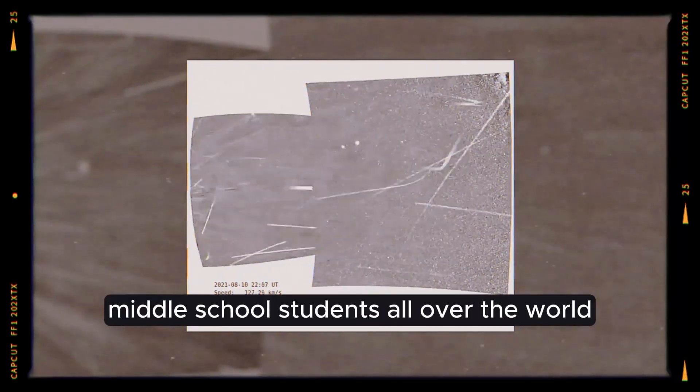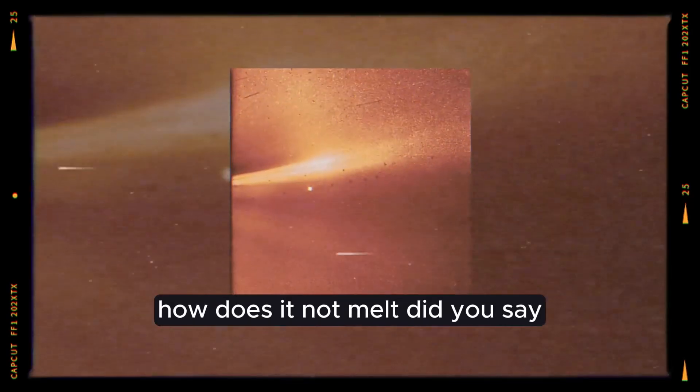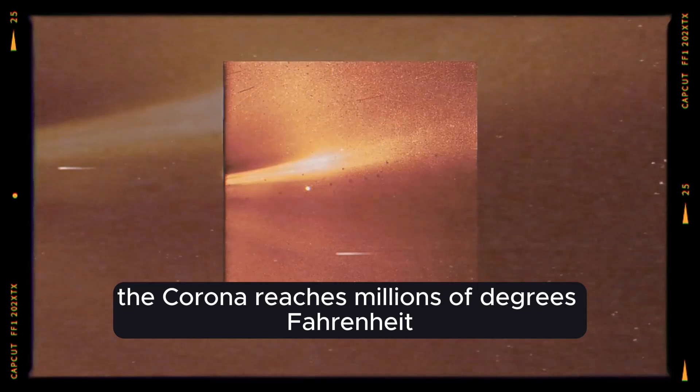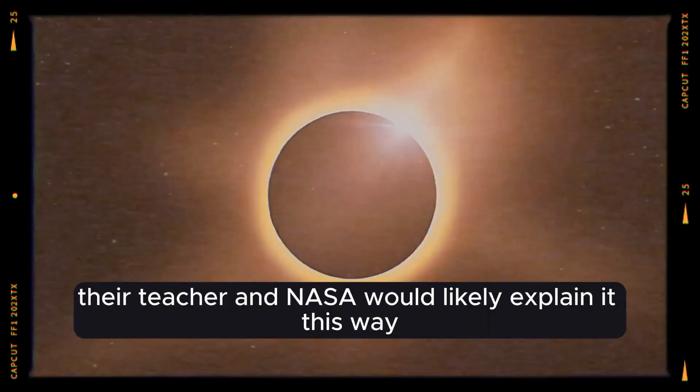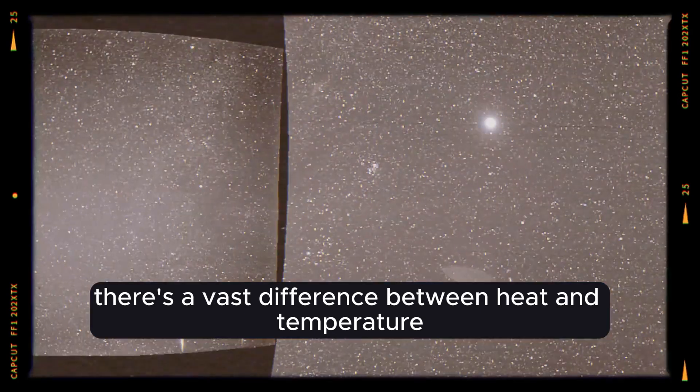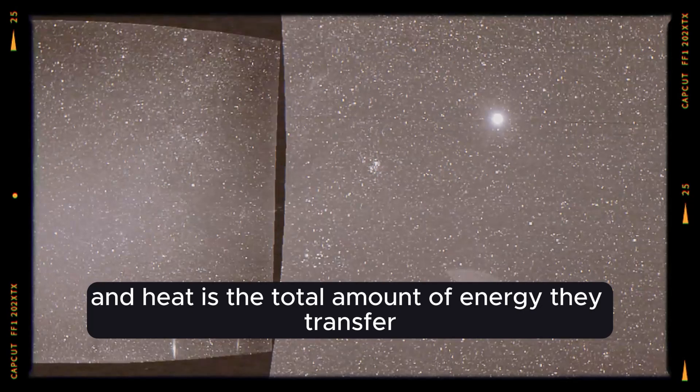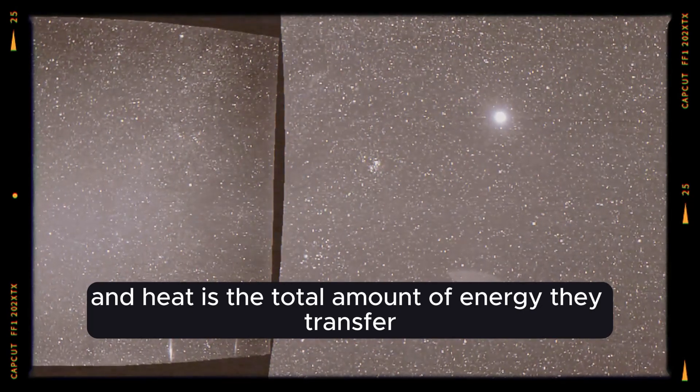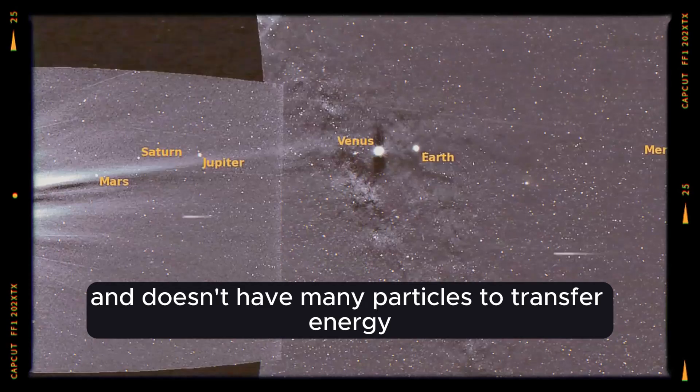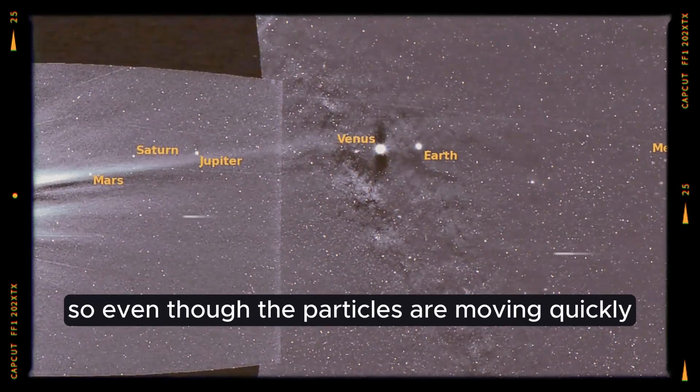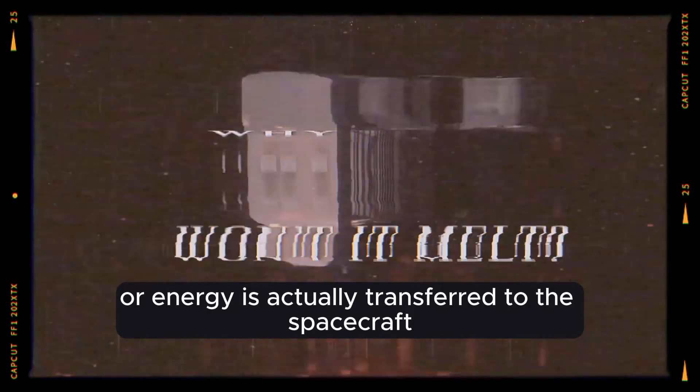Middle school students all over the world would probably raise their hands and ask their teacher, how does it not melt? Did you say the corona reaches millions of degrees Fahrenheit? Their teacher and NASA would likely explain it this way: there's a vast difference between heat and temperature. Temperature is the speed at which particles are moving, and heat is the total amount of energy they transfer. The corona is very thin and doesn't have many particles to transfer energy. So even though the particles are moving quickly and the temperature is high, not much heat or energy is actually transferred to the spacecraft.